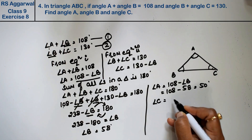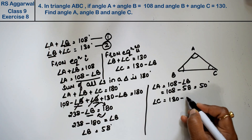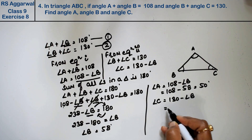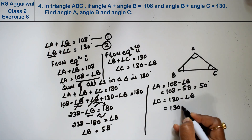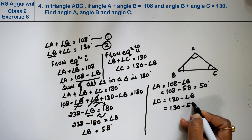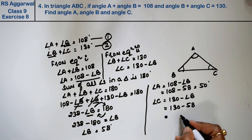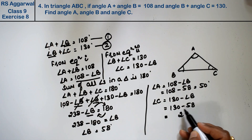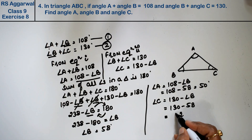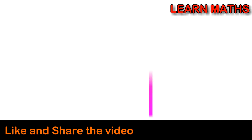Now let's find angle C. Angle C equals 130 minus angle B, so angle C equals 130 minus 58, which equals 72 degrees.